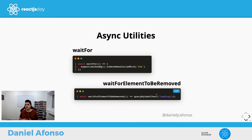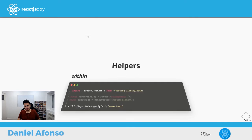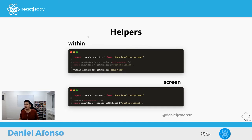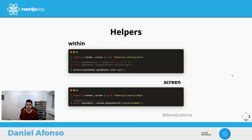Now we have all we need to start writing tests with the React Testing Library. But there are also a couple of helpful utilities. First is 'within' — normally a query runs against the entire container. If you only want to run a query inside a specific div, import 'within' from the React Testing Library, pass it your node, and call the query on it — it runs only inside that node.